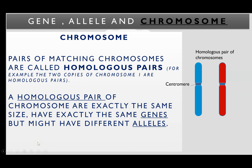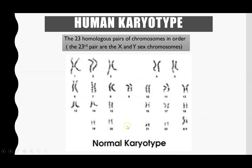So a homologous pair, if asked to define it in the exam, is a pair of chromosomes which have exactly the same genes. We've got the 23 pairs of chromosomes found in a human body cell — we call this image a human karyotype, where all chromosomes are organised in their pairs. We can see they are the same size, and the dark and light coloured bands are in the same positions, showing they contain exactly the same genes. The 23rd pair — labelled X and Y — are the sex chromosomes, which determine biologically whether you are male or female.